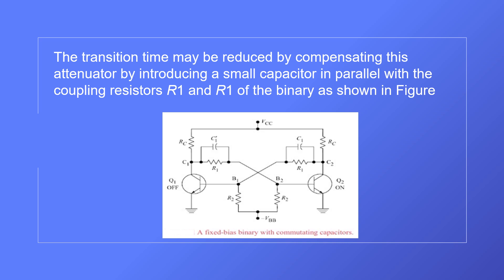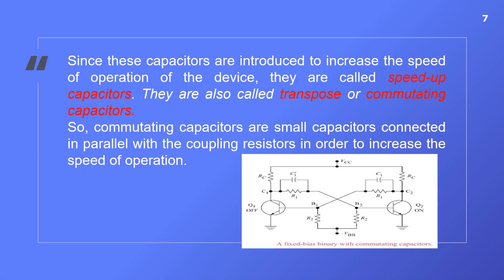The attenuator formed by R2 can become compensated, and then the transition time comes down. If the transition time decreases, the signal at the collector of transistor Q1 will be transferred to the base of the other transistor almost instantaneously, and the speed of operation increases. Since these capacitors are introduced to increase the speed of operation, they are called speed capacitors. They are also called transpose capacitors or commutating capacitors. Commutating capacitors are small capacitors connected in parallel with the coupling resistors in order to increase the speed of operation.